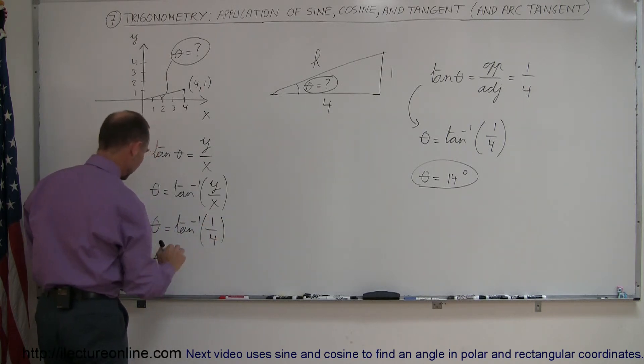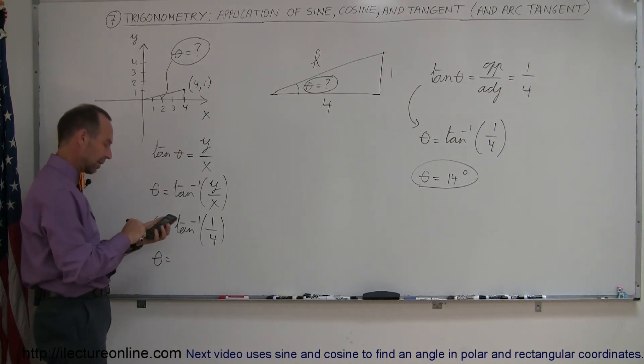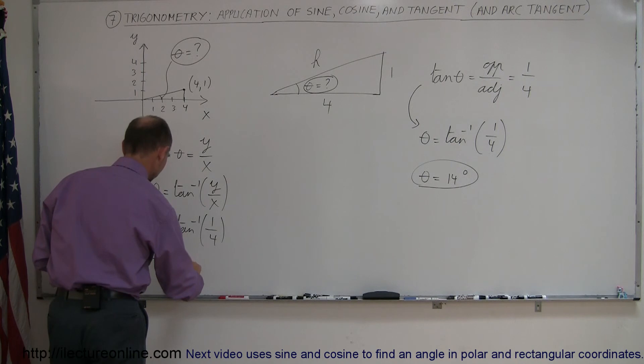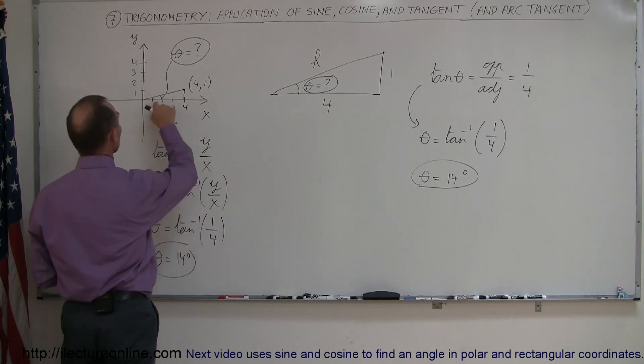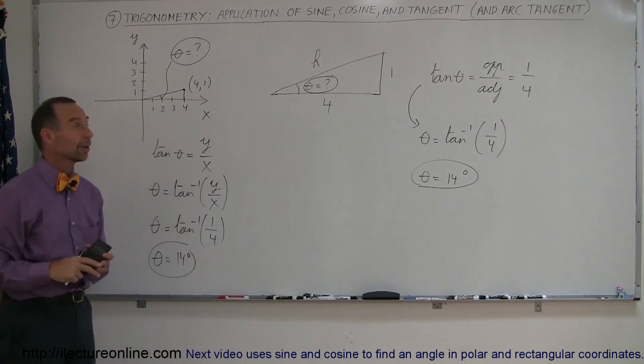And then just like before, when you put that in your calculator, 1 divided by 4, take the arctangent of that, you get 14 degrees. And so you know the angle between that line and the horizontal axis is 14 degrees.